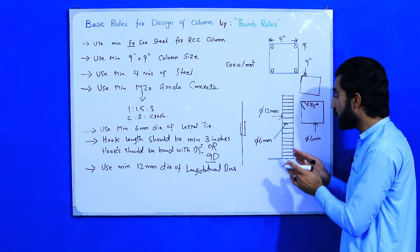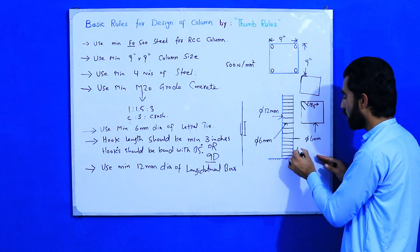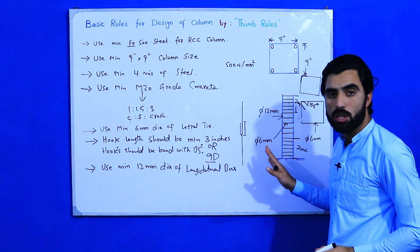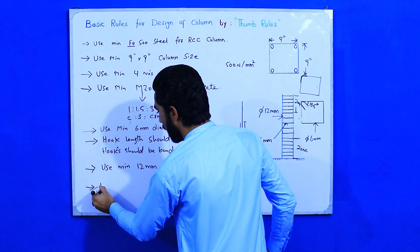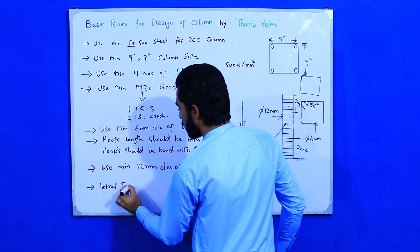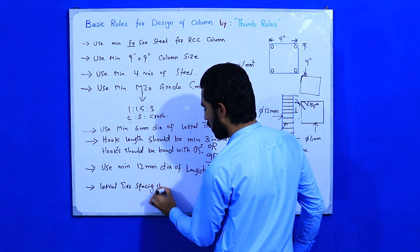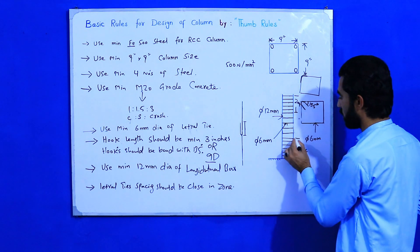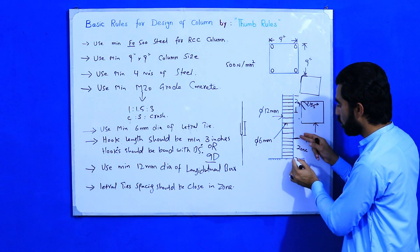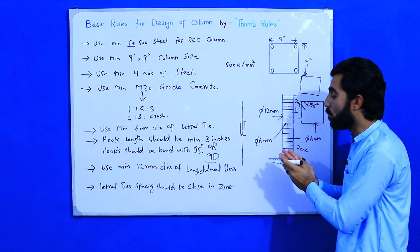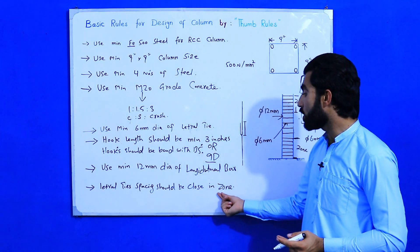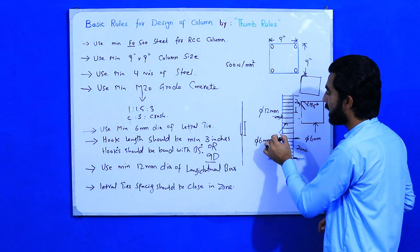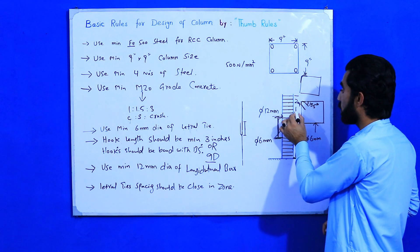For spacing, at the end supports and in the lapping zone, the lateral tie spacing should be close. This zone near the foundation support and the zone near the slab are where the lateral tie spacing should be close — in the lower portion and in the top portion. At the mid-span it should be maximum, but at the base point and at the top point it should be minimum.